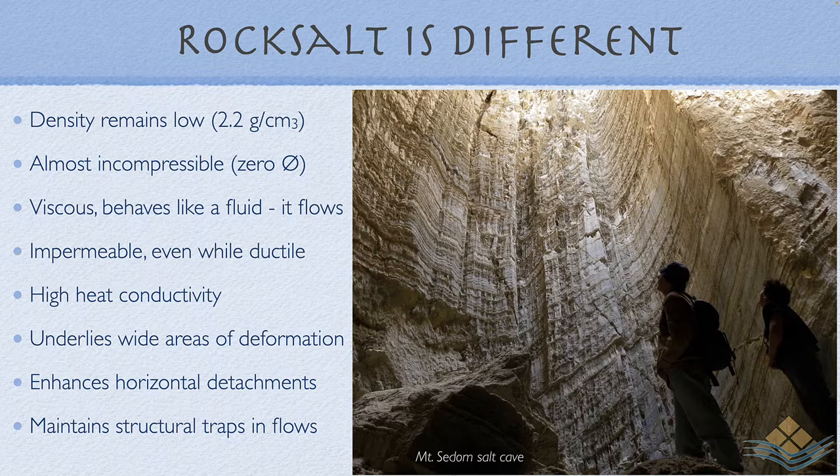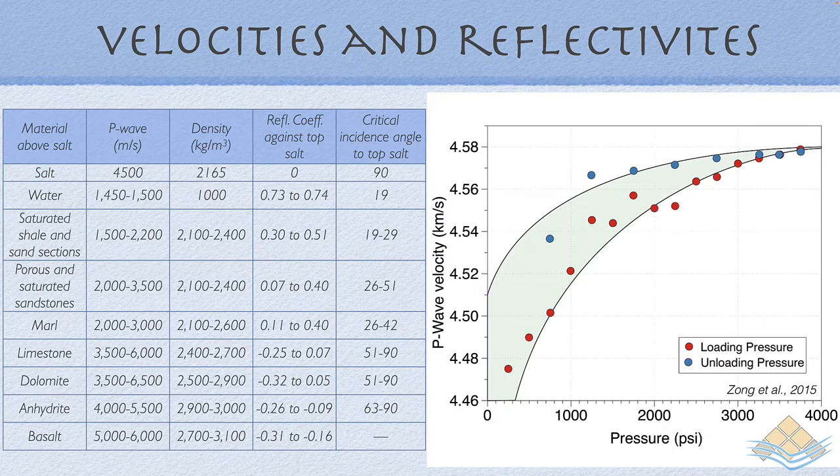Salt's ability to flow in the diagenetic realm is why it underlies wide areas of deformation within salt-floored basins, and its ability to climb through tiers of overlying sediment is why it creates a series of horizontal detachments and décollements in the overlying sediment column. This combination of flow, structure, and impermeability means salt can maintain structural traps in regions of salt flow in many sedimentary basins around the world.